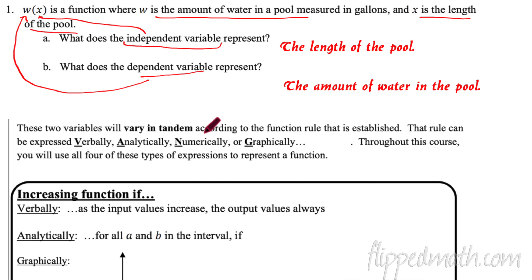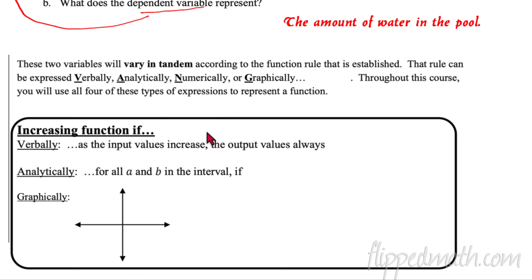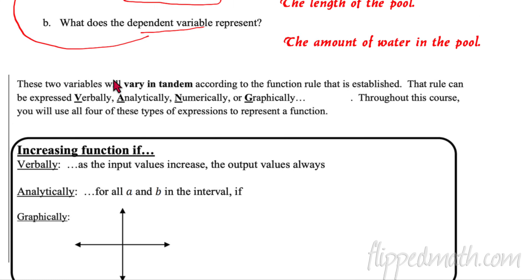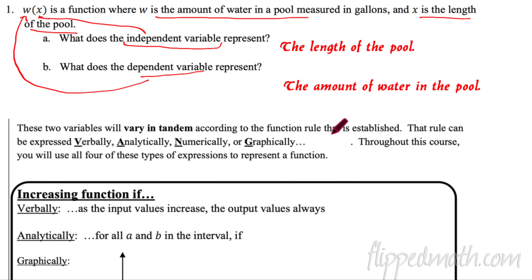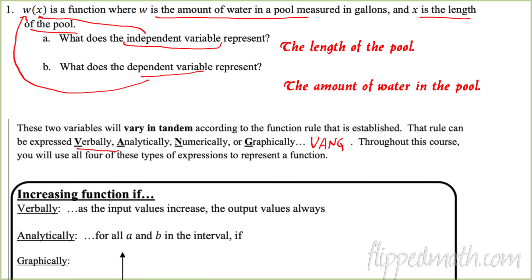That brings us to the lesson name: varying in tandem. These two variables will vary in tandem according to a function rule that's established. The rule can be expressed verbally, analytically, numerically, or graphically. We're going to take the first letters of all those and call it VANG — that's going to remind us of the four different ways we can represent a function.